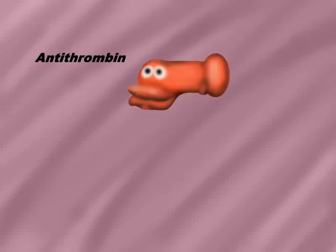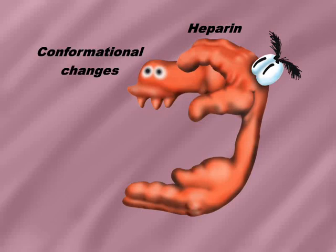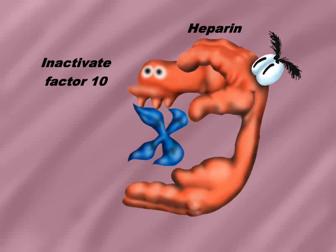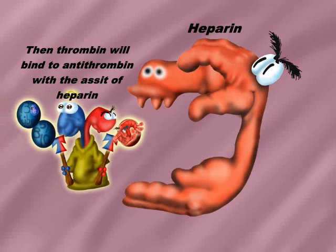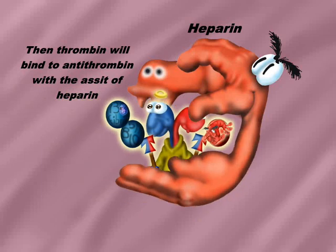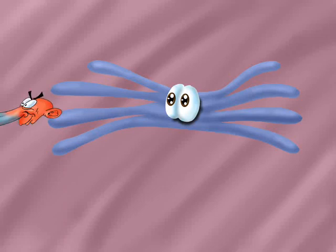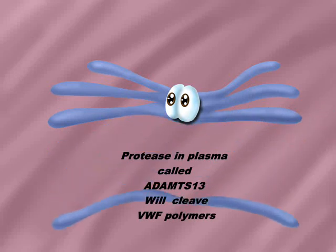Tissue plasminogen activator inhibitor is itself inactivated by protein C. Antithrombin also contributes to clot destruction: heparin binds to antithrombin and induces a conformational change, allowing it to bind and deactivate active factor 10 and thrombin. Finally, a plasma protease cleaves von Willebrand factor polymers.